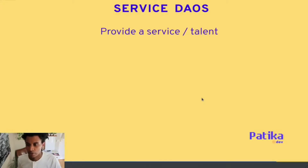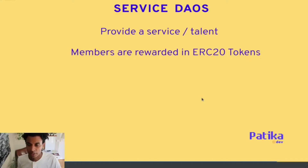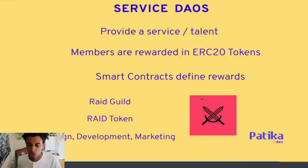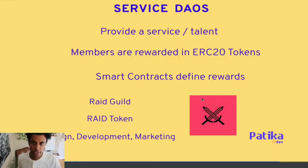Next, we'll look at service DAOs, which provide a service or talent in an agency model — either to other DAOs or to projects and protocols looking for that service. Some members are rewarded in ERC tokens, directly tied and aligned to the DAO's goals, and smart contracts define who gets rewarded. An example is the RAID Guild. They have a RAID token used for providing their services — design, development, or marketing. You purchase a RAID token to pay RAID Guild directly, and if you contribute to those projects as a RAID member, you receive a portion of RAID tokens based on the smart contracts.